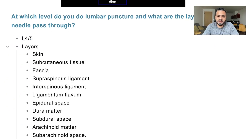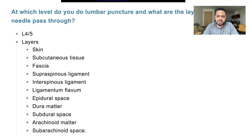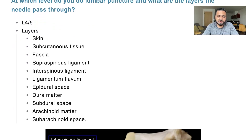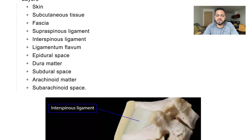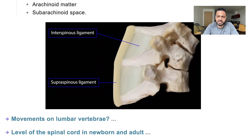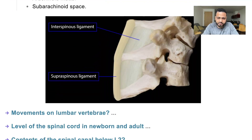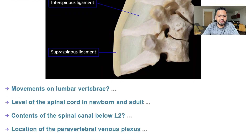So, L4-5, then: skin, subcutaneous tissue, supraspinous ligament, interspinous ligament, ligamentum flavum, epidural space, dura mater, subdural space, arachnoid mater, subarachnoid space — excellent. The supraspinous and interspinous ligaments are the wide structures, and then you go into the foramen after that.